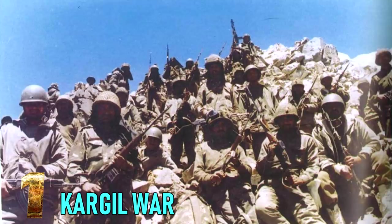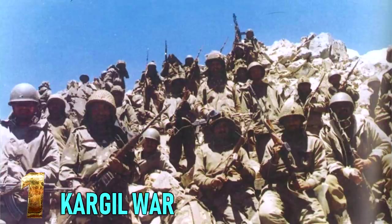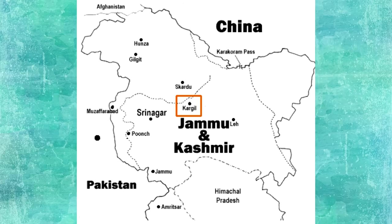Number one: the Kargil War. The Kargil War, also known as the Kargil Conflict, was an armed conflict between India and Pakistan that took place between May and July 1999 in the Kargil district of Kashmir and elsewhere along the Line of Control. The cause of the war was the infiltration of Pakistani soldiers disguised as Kashmiri militants into positions on the Indian side of the LOC.